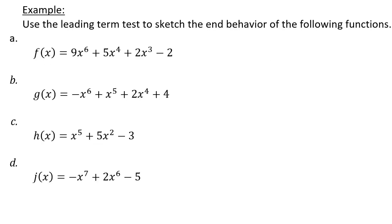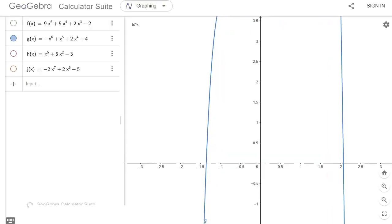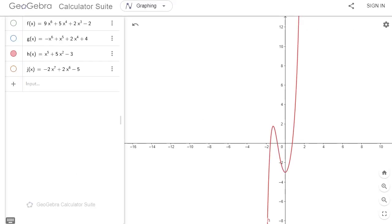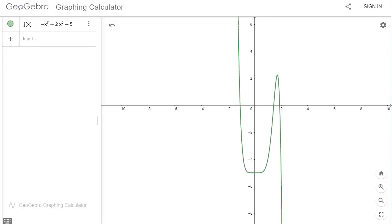In the example, we use the leading term test to sketch end behavior. In part a, f of x has a positive leading coefficient and an even degree, so it has a quadratic-like appearance opening upward. In part g, a negative leading coefficient and even degree gives a downward-opening shape. In part c, a positive leading coefficient and odd degree gives a cubic shape. In part d, an odd degree and negative leading coefficient also produces a cubic shape, flipped.